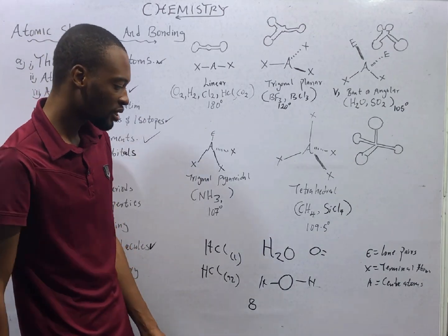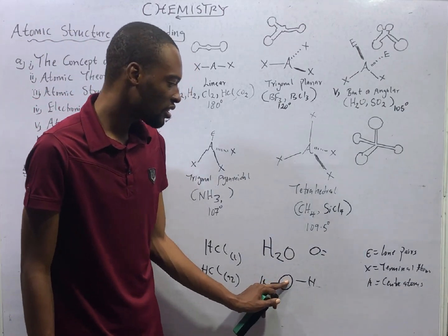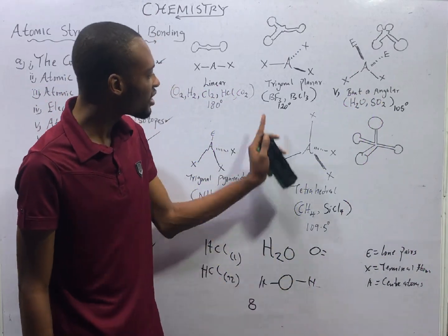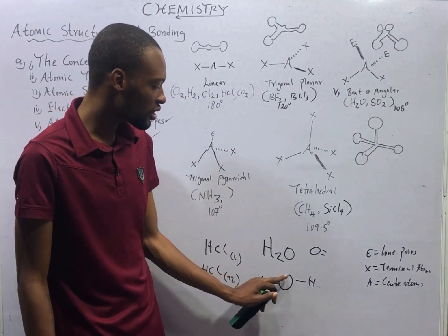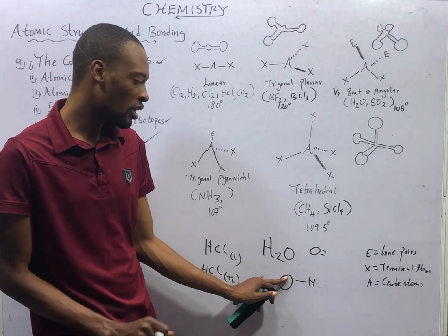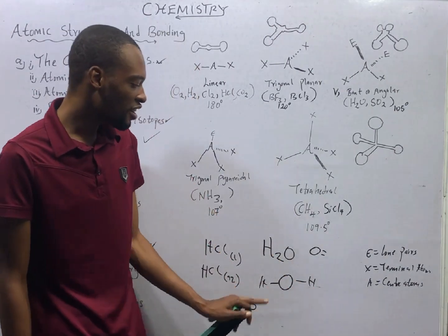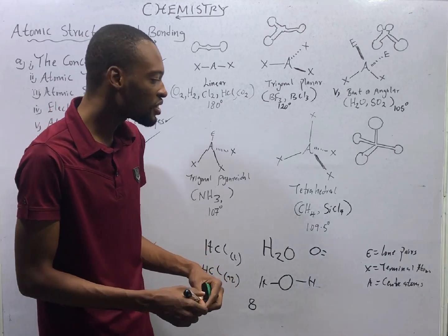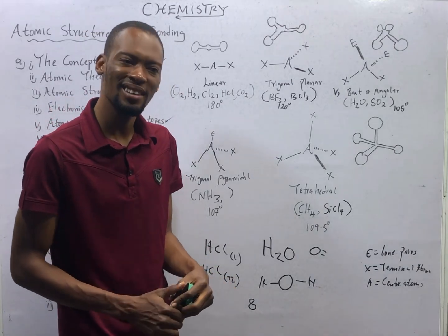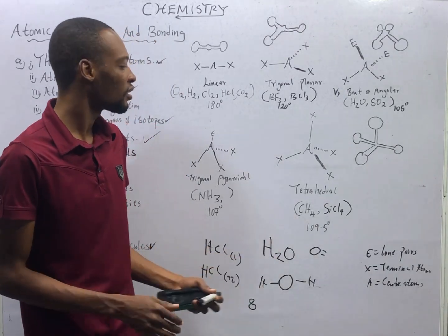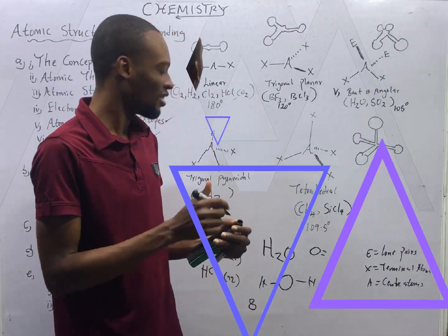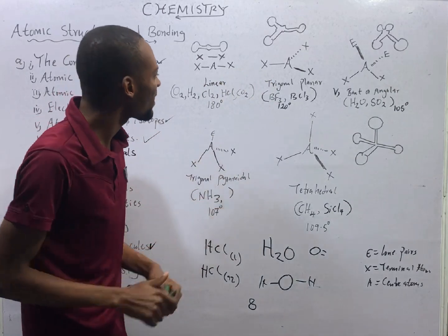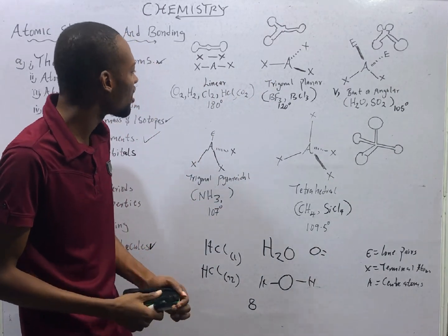What I am trying to bring out is that oxygen is the central atom. Anytime you see A in these diagrams, it refers to the central atom — the one in the middle. When you see S, they refer to the terminal atoms, the atoms hanging around. And anytime you see E, they are lone pair electrons. Now, a molecule can be linear — a straight line.